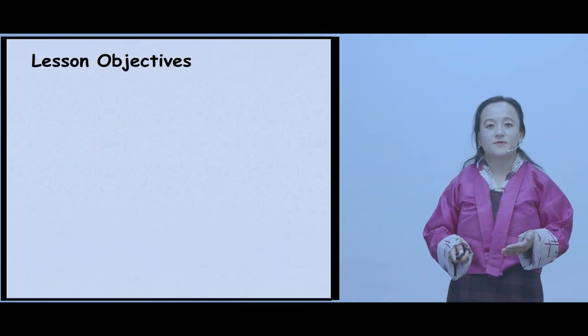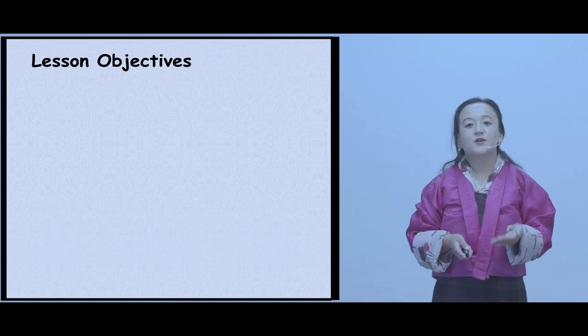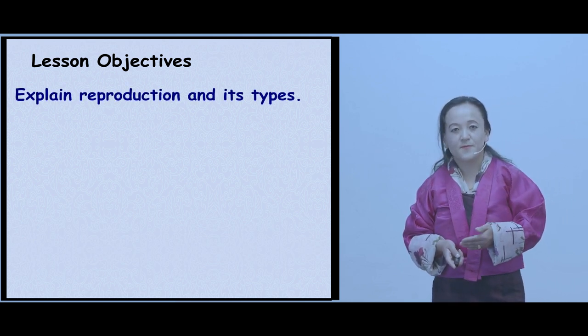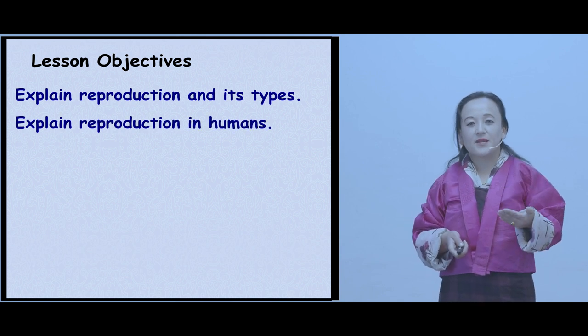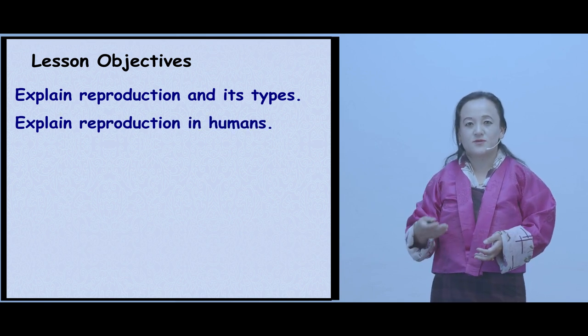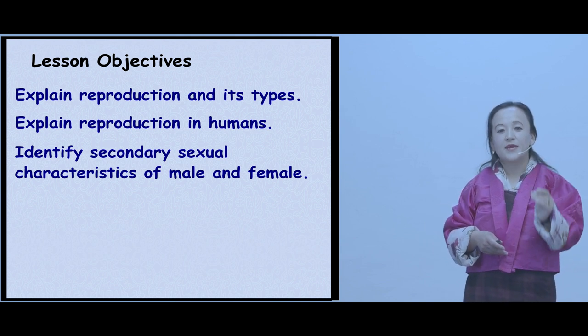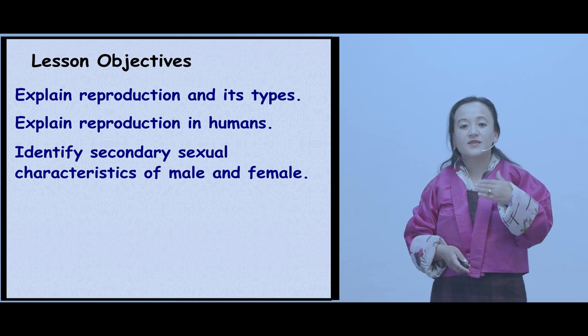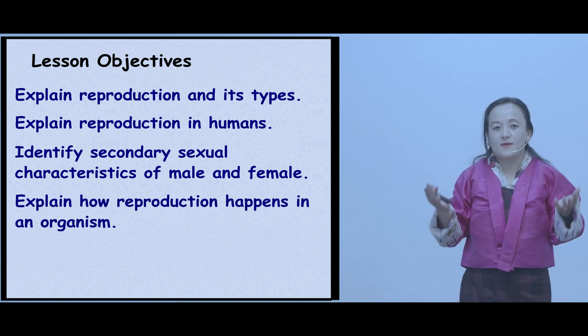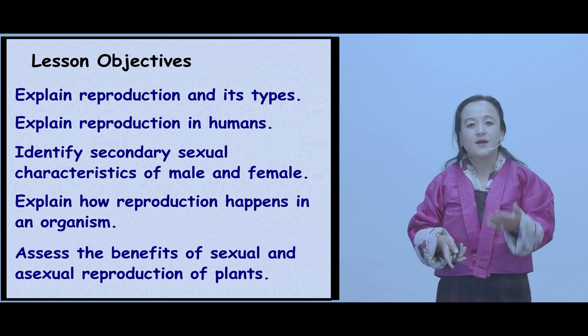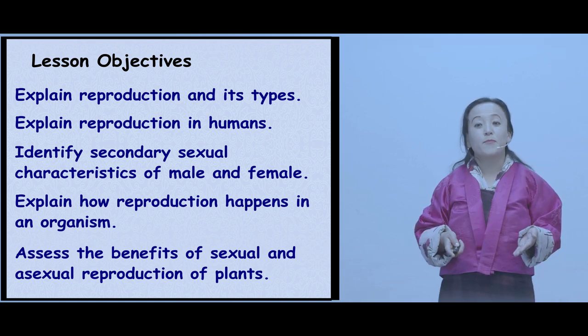Before we begin our lesson, let us run through the lesson objectives. By the end of the lesson, you should be able to explain reproduction and its types, explain reproduction in humans, identify secondary sexual characteristics of male and female, explain how reproduction happens in an organism, and assess the benefits of sexual and asexual reproduction of a plant.